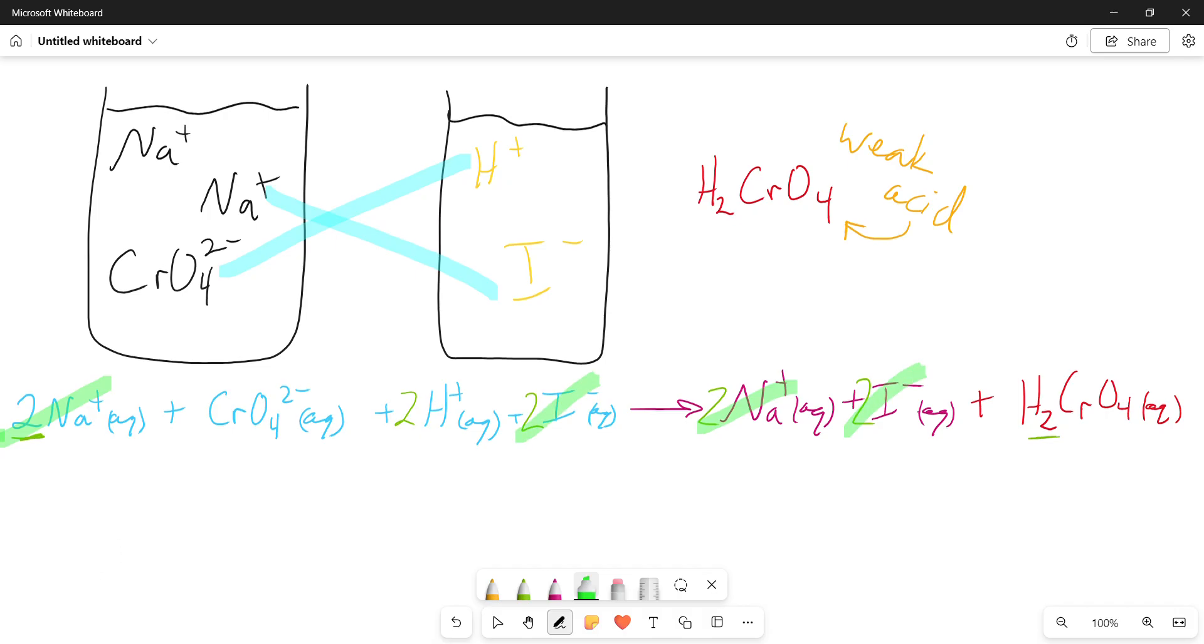And what we're left with, as our net ionic equation, is CrO4 2 minus aqueous, plus 2H plus aqueous, gives us H2CrO4 aqueous.